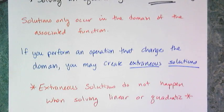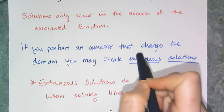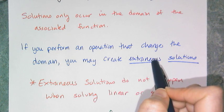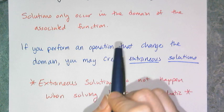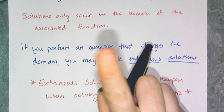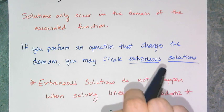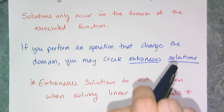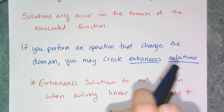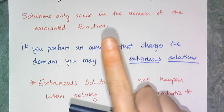Here's the thing: if you perform an operation — like you square both sides, or you multiply or divide both sides of an equation — by something that changes the domain of the original, you may — not always, but you may — create something called an extraneous solution. And what that is, is an answer that works for the transformed version but not the original version.